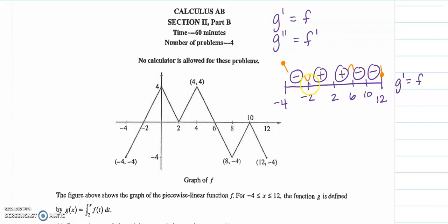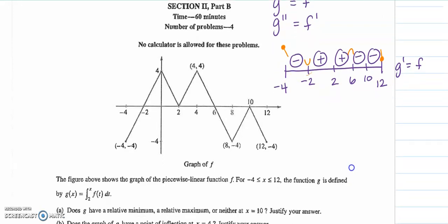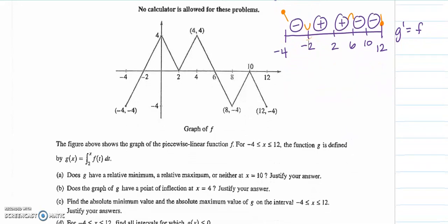This tells me I have two possible minimums here at negative 2 and 12, and then two possible maxes at negative 4 and 6. So the first question, part a, does g have a relative min, a relative max, or neither at x equals 10? At x equals 10 there is no change, therefore there's nothing happening at x equals 10. Neither, because g prime equals f does not change signs.